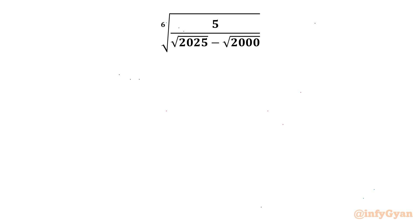Welcome to InfiGyaan, my dear friends. Today in this video we will be solving another very interesting question from Radical Mathematics. We have to evaluate the 6th root of 5 over the quantity square root of 2025 minus square root of 2000. Let us get started by considering the expression equal to E.